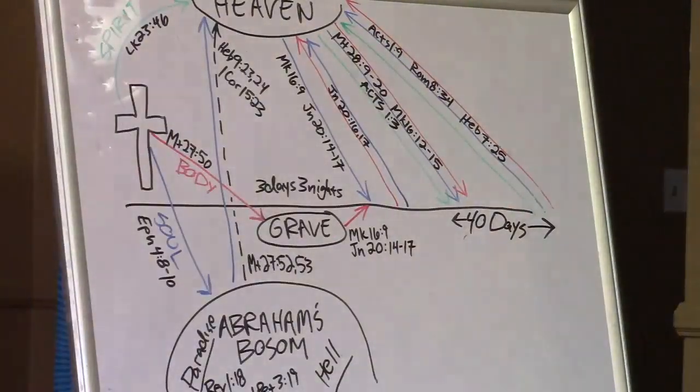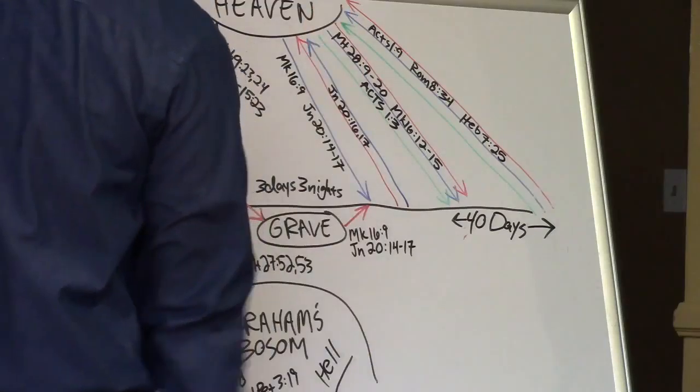And now let's go to Acts 1-9. You're already in Acts. Acts 1-9. When he had spoken these things, while they beheld, he was taken up, and a cloud received him out of their sight. So this is the Jesus' final ascension, where he's actually three parts. Body, soul, spirit, body, soul, spirit. The final ascension.